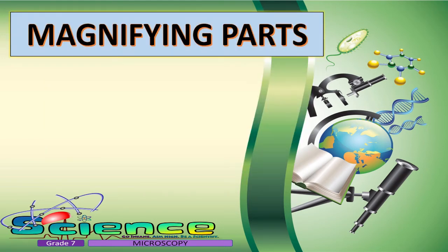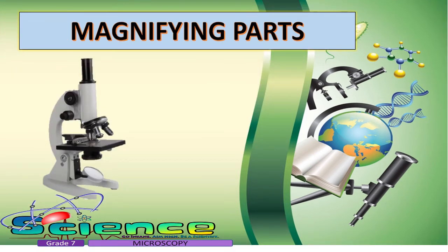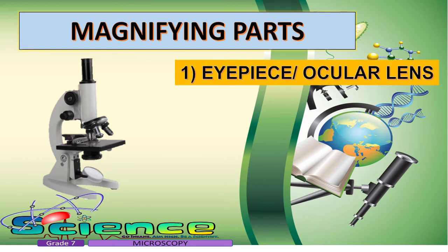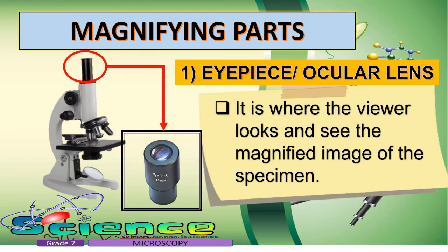The magnifying parts make a specimen look bigger. The specimen is the object, part of an object, or organism that we study or examine under a microscope. The first magnifying part is the eyepiece, also known as the ocular lens. These are the lenses located at the top of the microscope, where the viewer looks to see the magnified image of the specimen. Its standard magnification is 10 times.